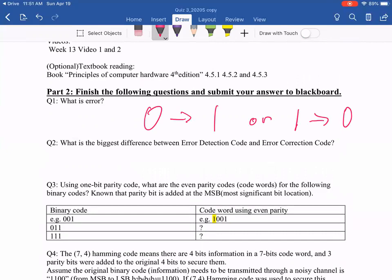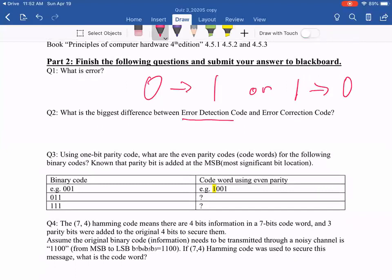your original message is zero and they change to one. Or your original message is one and they change to zero. So what is the biggest difference between the error detection code and the error correction code? So I just talked about this in the previous videos for this week. But remember,